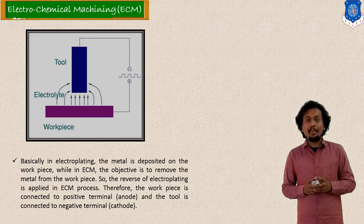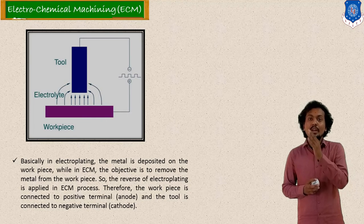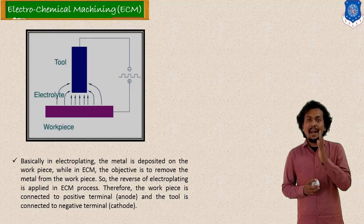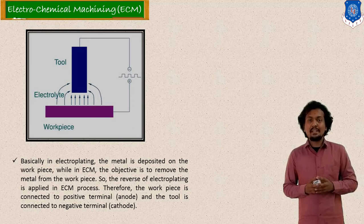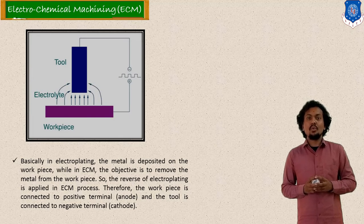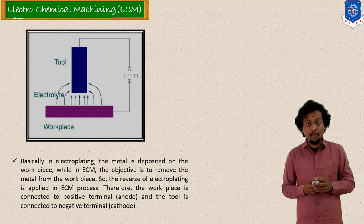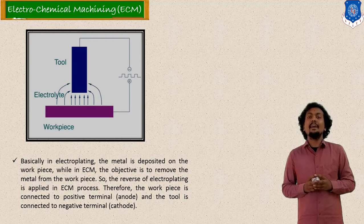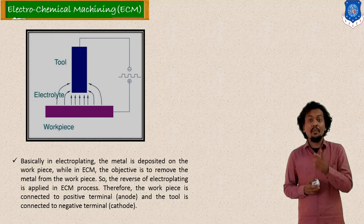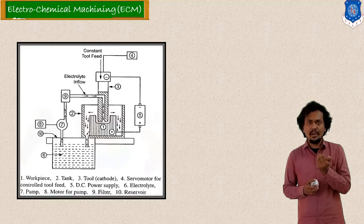In electroplating, material is deposited onto the workpiece. But here our purpose is to remove the material from the workpiece. That is reverse electroplating, and that is nothing but our Electrochemical Machining process, in which material is removed from your workpiece.